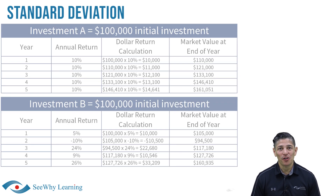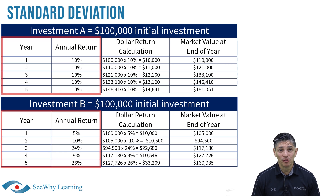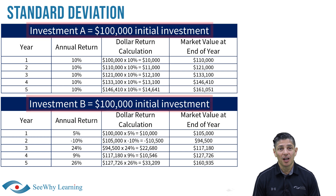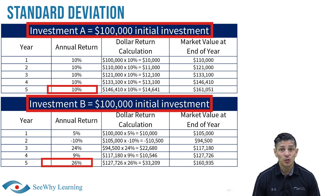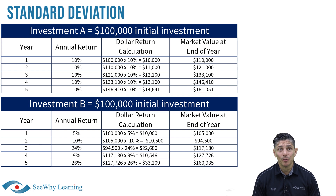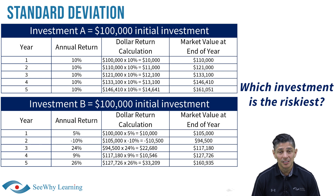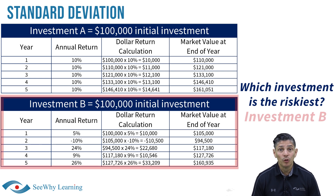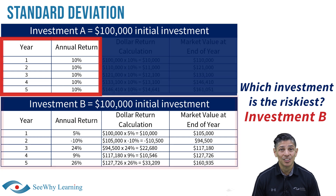You will now see two investments on the screen, along with their annual returns over a five-year period. Notice that if you invested $100,000 in each of these investments, at the end of five years the market values would pretty much be the same — roughly $161,000. Despite having a similar return over the five-year period, if I asked you which investment is the riskiest, I think most of you would agree it would be investment B.